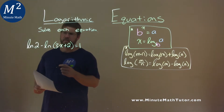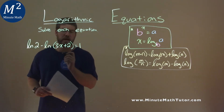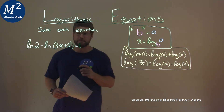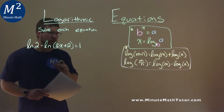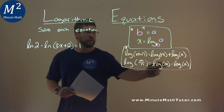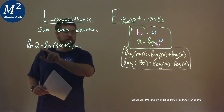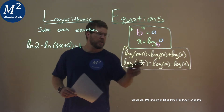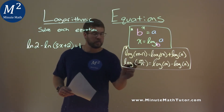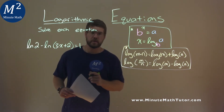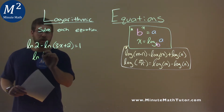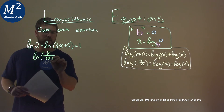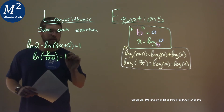We're given this problem: the natural log of 2 minus the natural log of 3x plus 2 equals 1, and we have to solve this equation. This is a special one — it's going to be a little difficult. We're going to use the subtraction formula. We're subtracting a log with the same base — in this case, base e. We can combine it to be one logarithm with division on the inside.